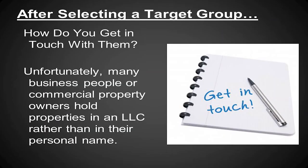Once you decide on a target audience, how do you get in touch with them? Unfortunately, many business people or commercial property owners hold properties in an LLC rather than in their personal name. You identify the properties that meet your target audience, get the tax records to find the listed owner — often an LLC — then search the LLC database to find the actual owner, or simply pick up the phone and call the business to ask who owns the place. Then you get their phone number or email, call them, and put them into your contact management software. If you're not using contact management software, you need to start.